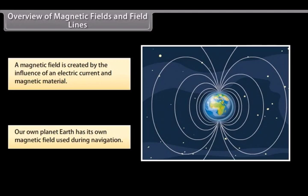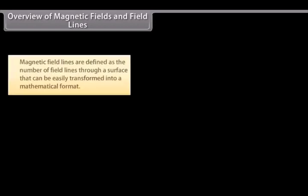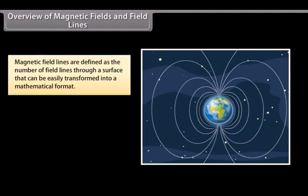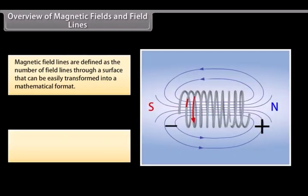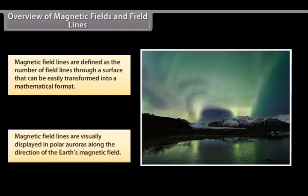Magnetic fields are also used in electric devices, such as transformers. Magnetic field lines can be compared to the constant altitude lines that are visible on a map. Magnetic field lines help in stating simple concepts of magnetism easily. These are defined as the number of field lines through a surface. These can be easily transformed into a mathematical format. Magnetic field lines are visually displayed in polar auroras where visible streaks of lines are created along the direction of Earth's magnetic field.